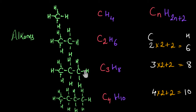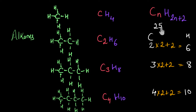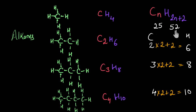So all the alkanes will have carbon and hydrogen according to this ratio only. If tomorrow you come across any alkane which has, let's say, 25 carbons, then the number of hydrogens will be twice 25, which is 50, plus two — that's 52. So C₂₅H₅₂ will be the molecular formula. Isn't that very convenient?